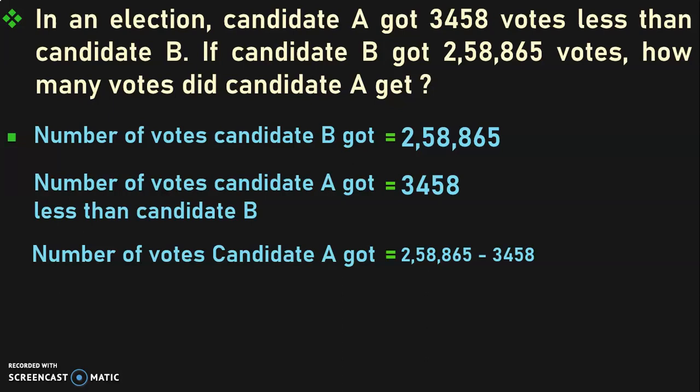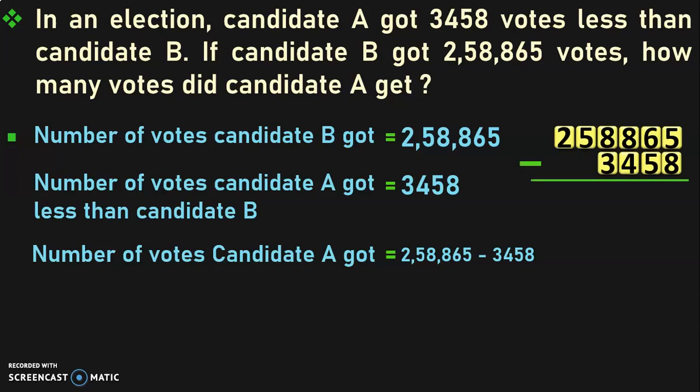Because we know the number of votes candidate B got, and we know the number of votes candidate A got less than candidate B, when you subtract these two, you get the number of votes candidate A got. So, let us write down the numbers in their appropriate places and perform the subtraction operation.